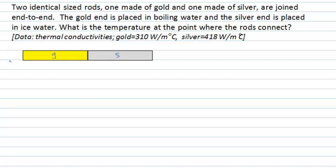One end of the rod, the gold end, is held in boiling water, which will have a temperature of 100 degrees Celsius. The other end of the rod, the silver end, is being held in ice water, and ice water in equilibrium will have a temperature of 0 degrees Celsius.